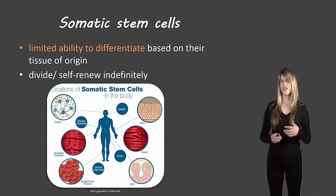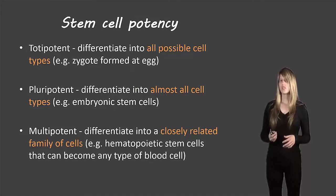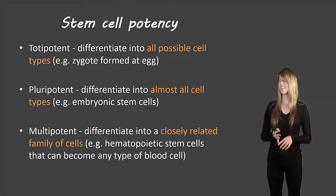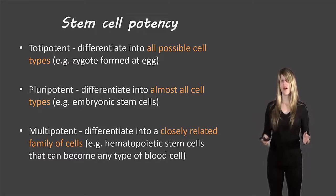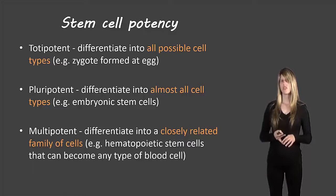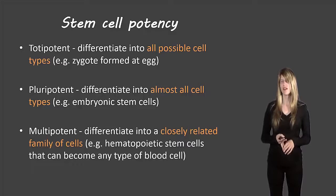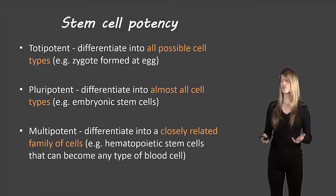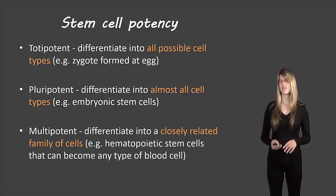Adult stem cells can also divide and self-renew indefinitely. In terms of terminology: totipotent means they can differentiate into all cell types possible; pluripotent means they can differentiate into almost any type of cell — those are the embryonic stem cells; and multipotent means they can differentiate into a closely related family of cells — those are the adult stem cells.